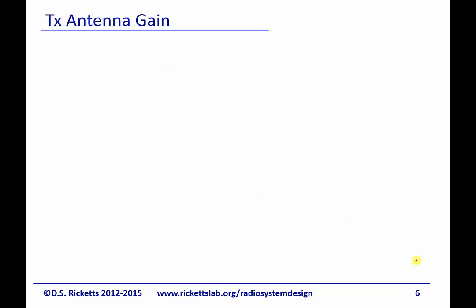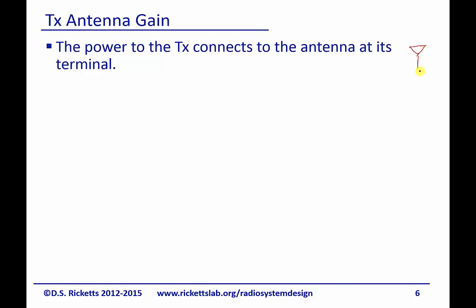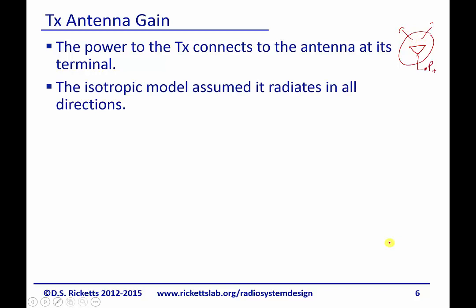So now let's talk about the idea of antenna gain. The power to a transmitter connects to the antenna at its terminals. So we can think about, if we have a little cartoon of an antenna here, I'm going to connect it right there. And here's my PT. So really, it is sort of a point source. I have power coming in, and it's a fixed unit of measure that I know. But what I don't know is how that power is going to propagate out in space. In the previous slide, we had just assumed that it was a perfect sphere that was getting larger as the distance increased. And that's what the isotropic model does, is it assumes it radiates in all directions evenly.